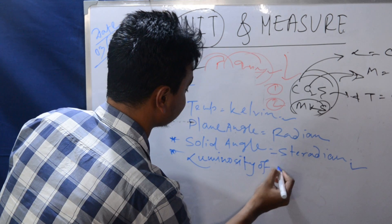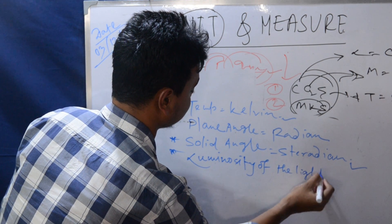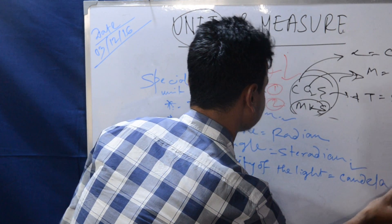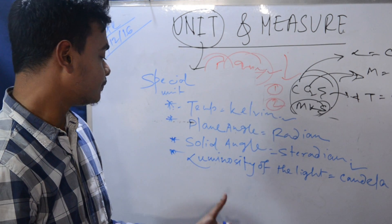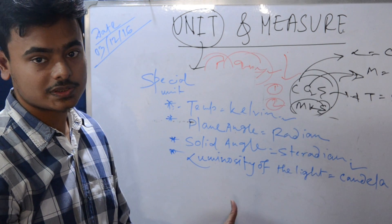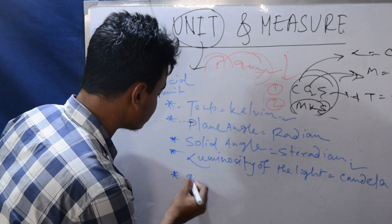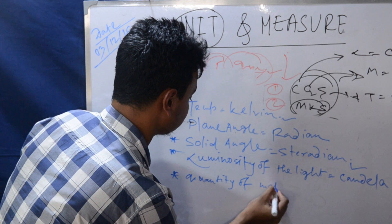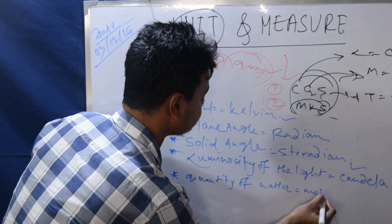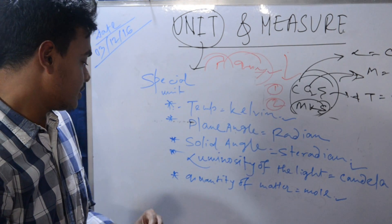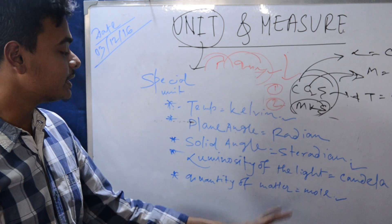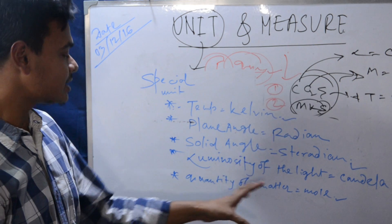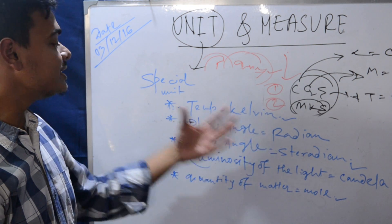Luminosity of light — its unit is candela. Please remember this. Quantity of matter is measured in mol. These are the definitions of these SI units — unit and physical quantity paired together.